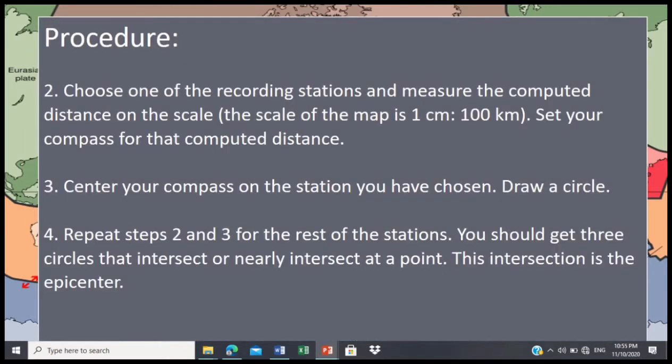Now, for procedure number 2: choose one of the recording stations and measure the computed distance on the scale. The scale of the map is 1 centimeter equals 100 kilometers. Set your compass for that computed distance. Third, center your compass on the station you have chosen, draw a circle. Fourth, repeat steps 2 and 3 for the rest of the stations. You should get 3 circles that intersect or nearly intersect at a point. This intersection is the epicenter.